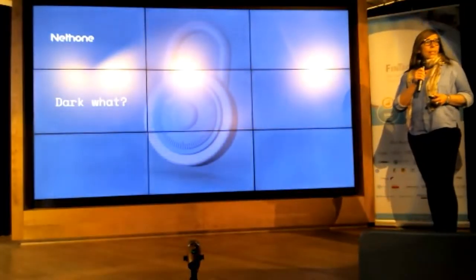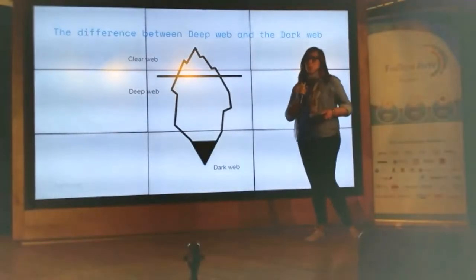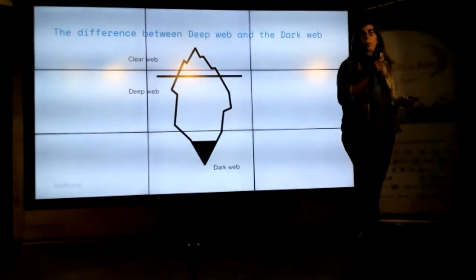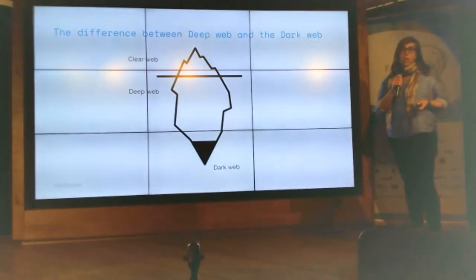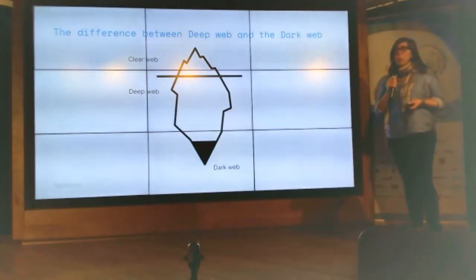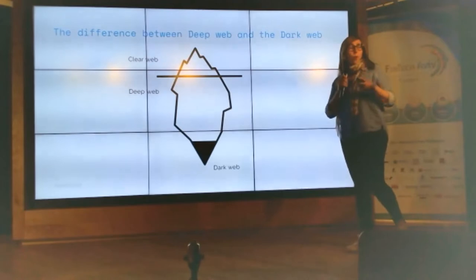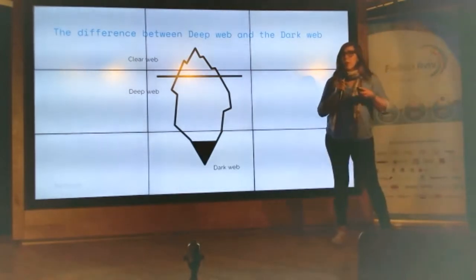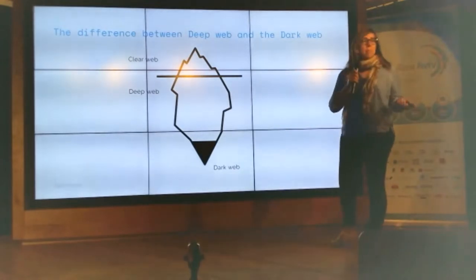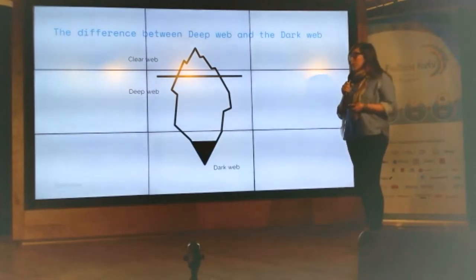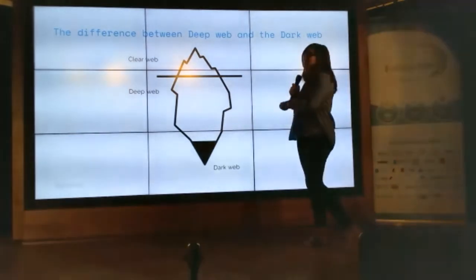First, let's start with what is exactly the dark web. The web as we know it contains three main parts. The first one is the clear web — the indexed web pages that all search engines can view when we do a search. This is actually only 4% of the web. Although every time we search using Google we get thousands of results, it's only 4%. Most of the web — 90% — is the deep web.